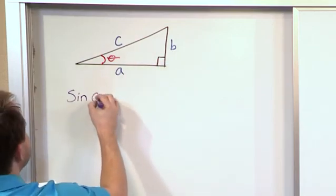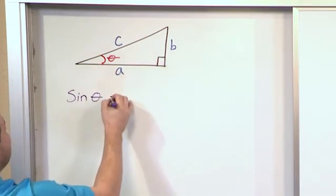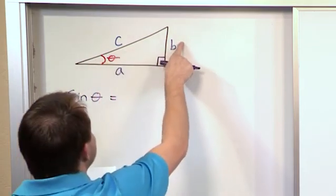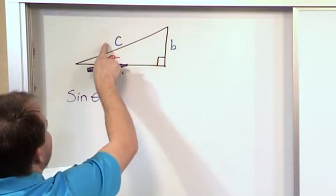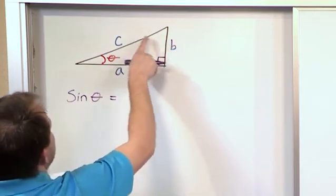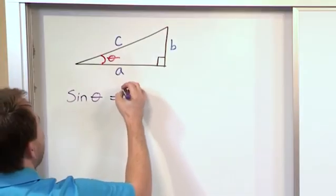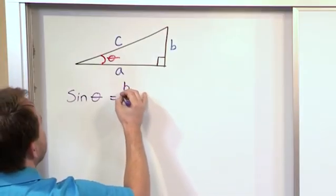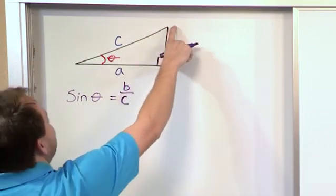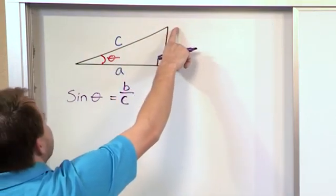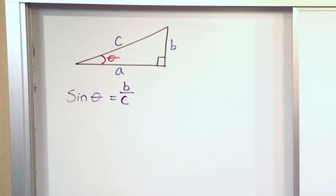So the sine of this angle here is going to equal the opposite side of the angle divided by the longest side, which is the hypotenuse. So it's opposite over hypotenuse. So what we have here is the sine of this angle is b over c. So it's the opposite side, meaning opposite of the angle divided by the hypotenuse. All right?